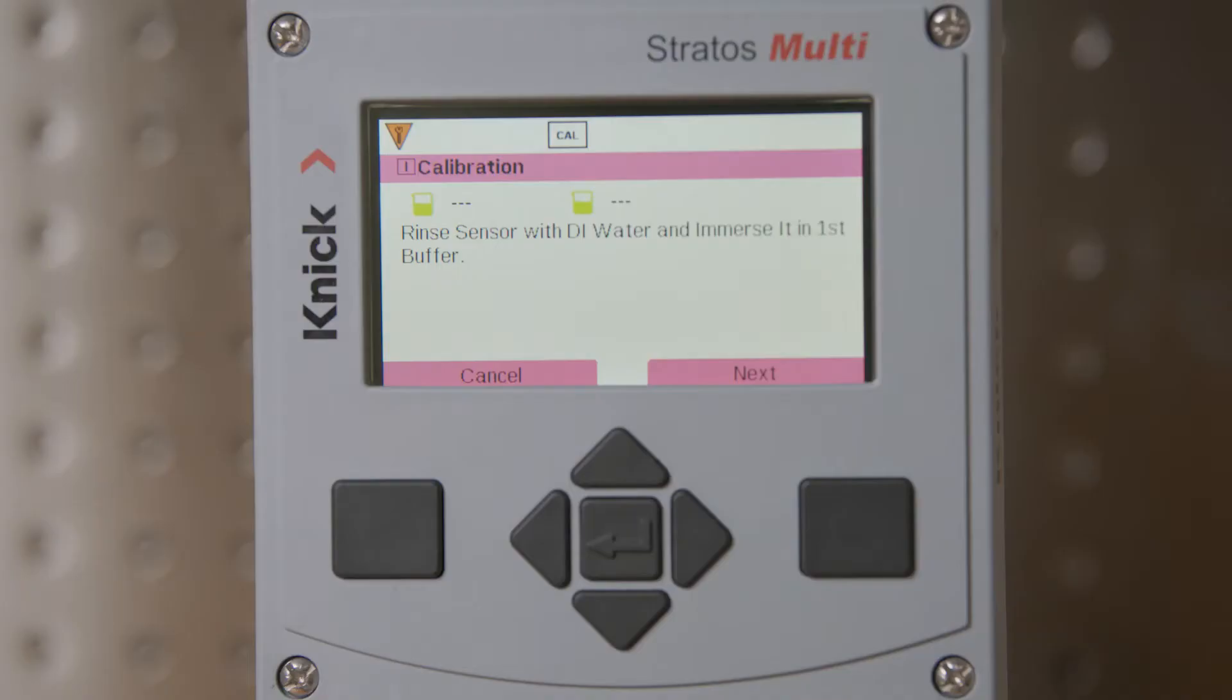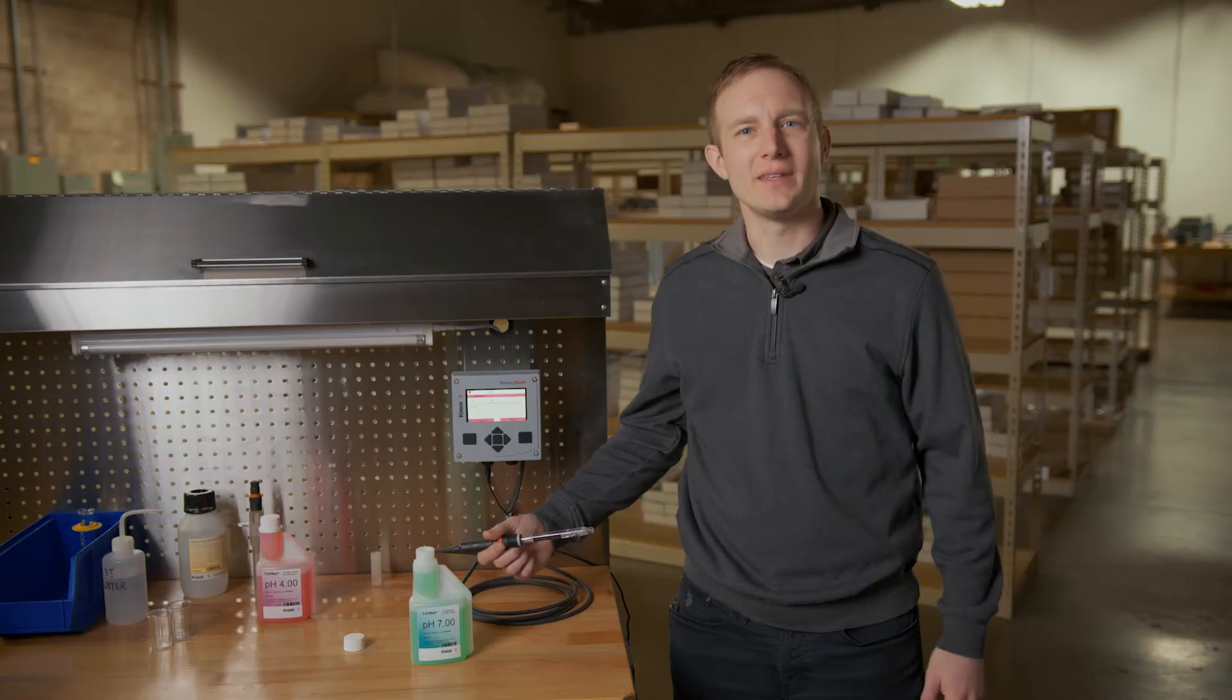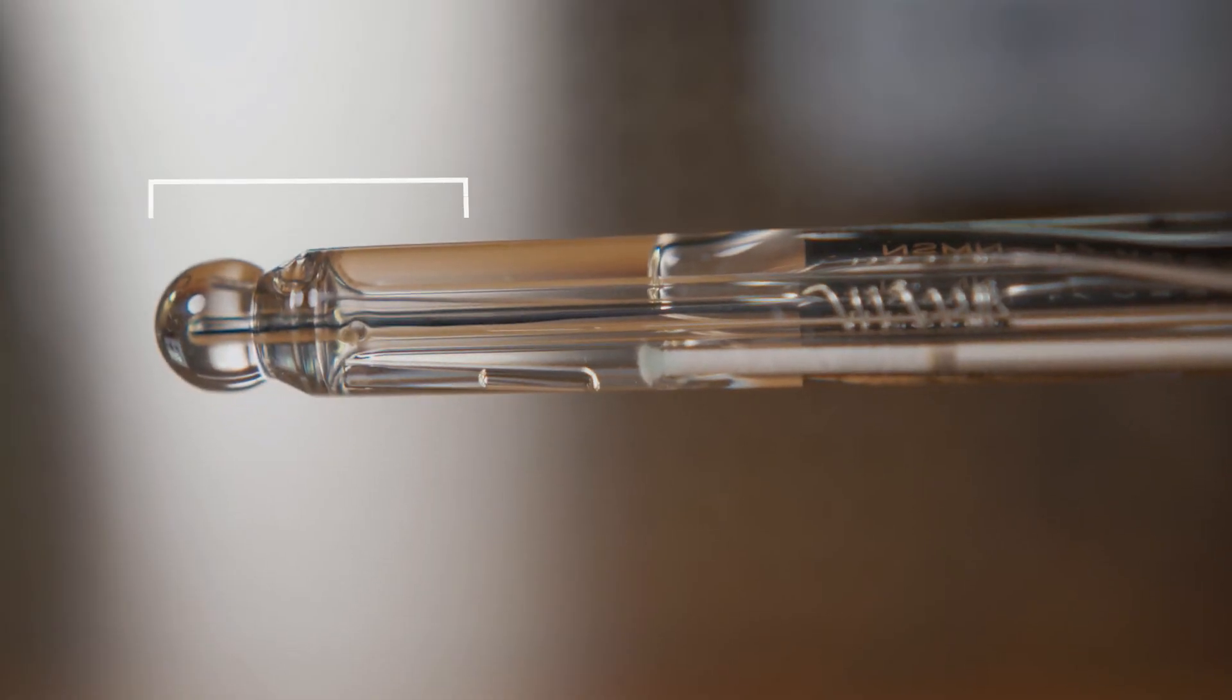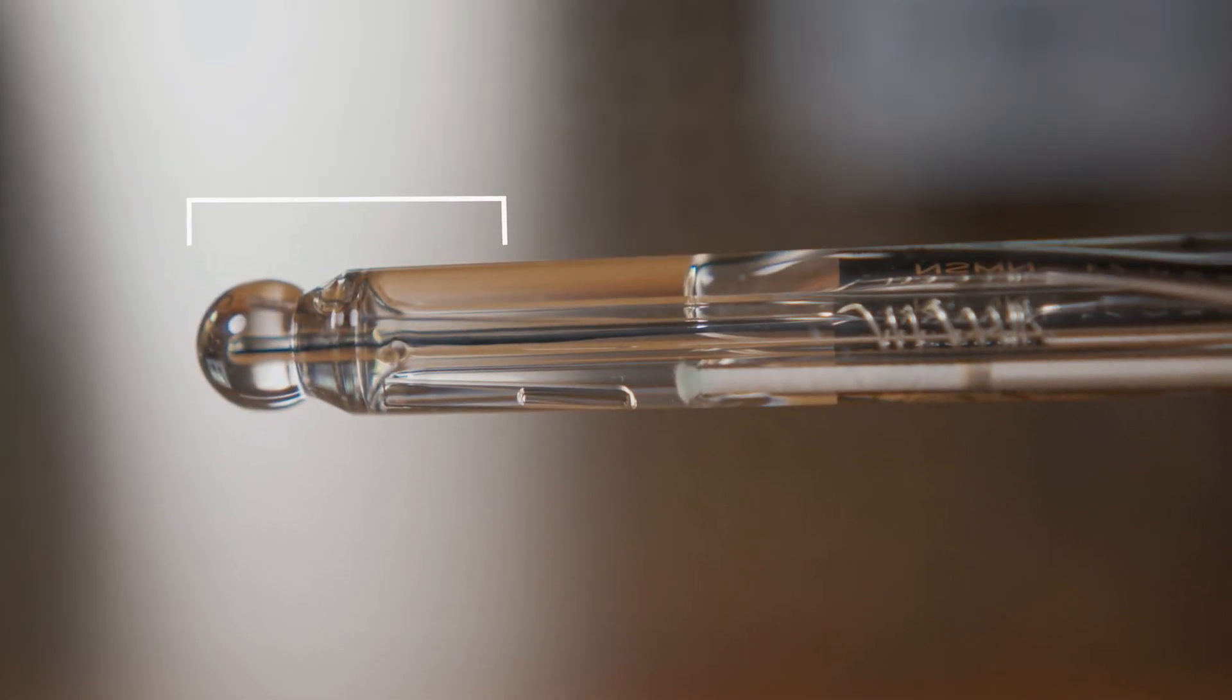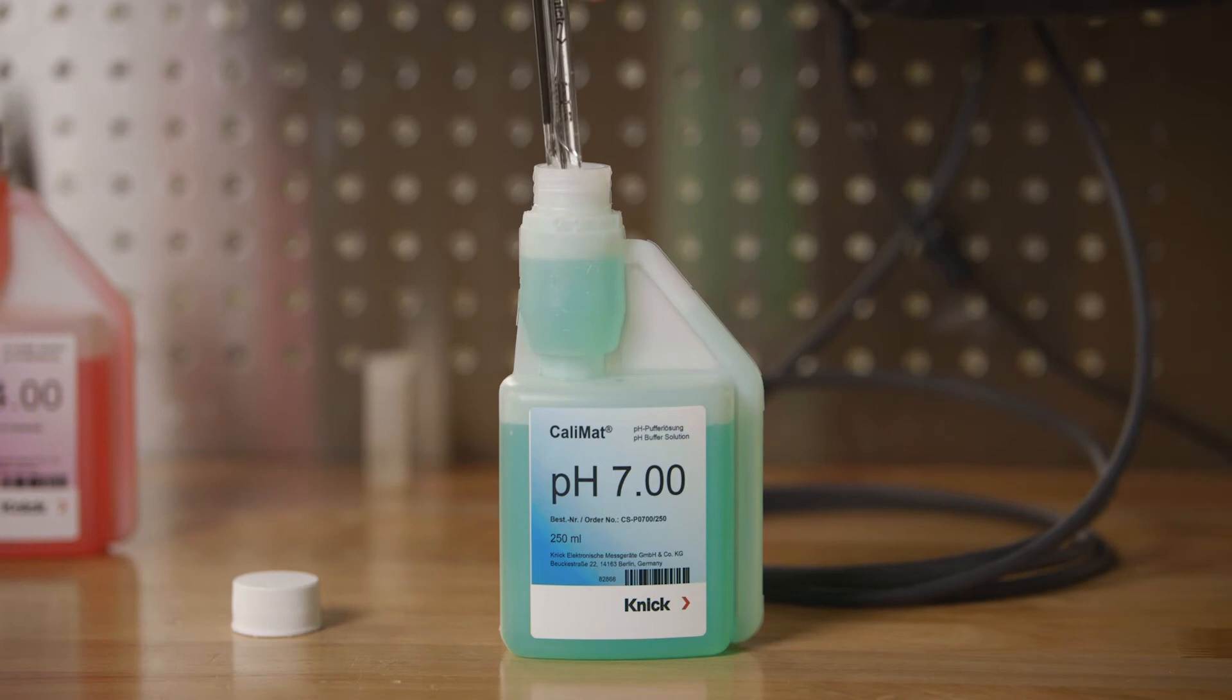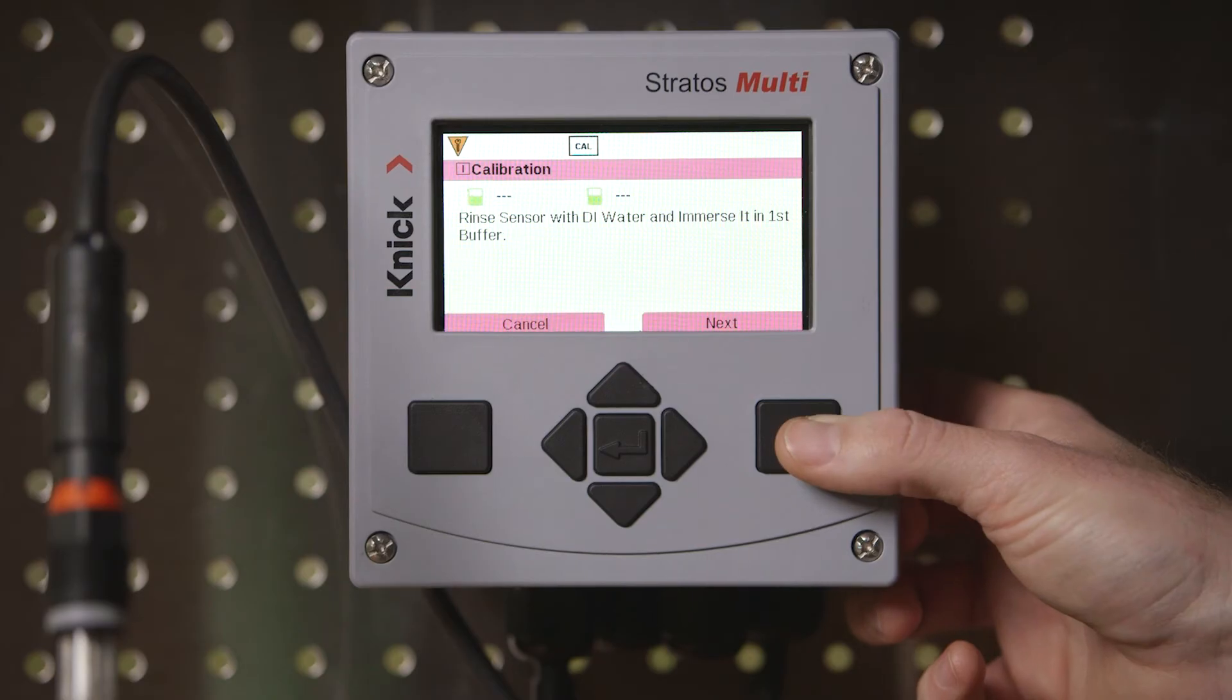Here we are prompted to rinse our sensor with DI water and place it in our first buffer solution. We will do so and place the sensor into the buffer 7. We want to ensure that the entire pH measuring bulb, along with the sensor's junction, are immersed in the buffer. We will stir lightly and then press the next button.